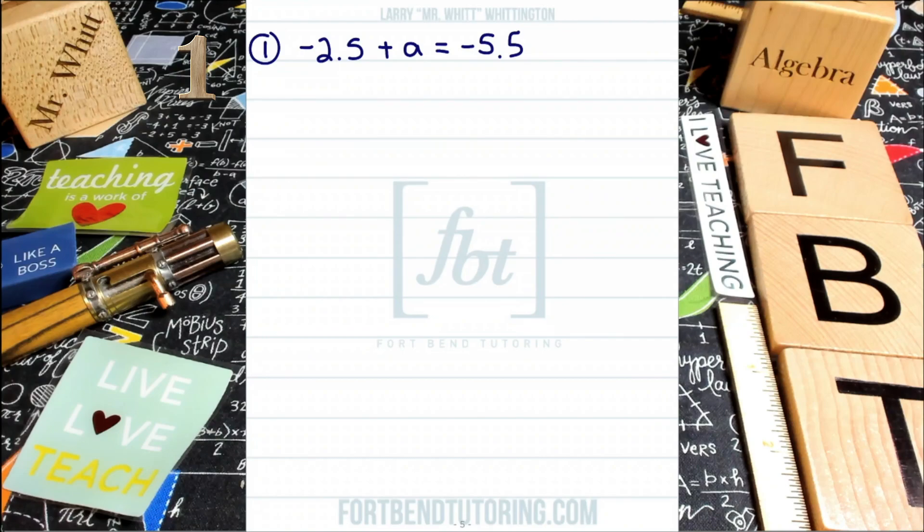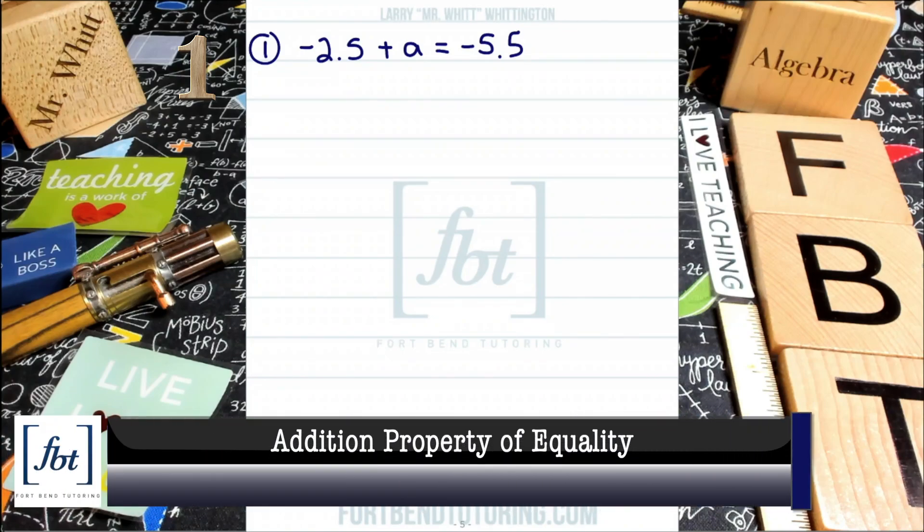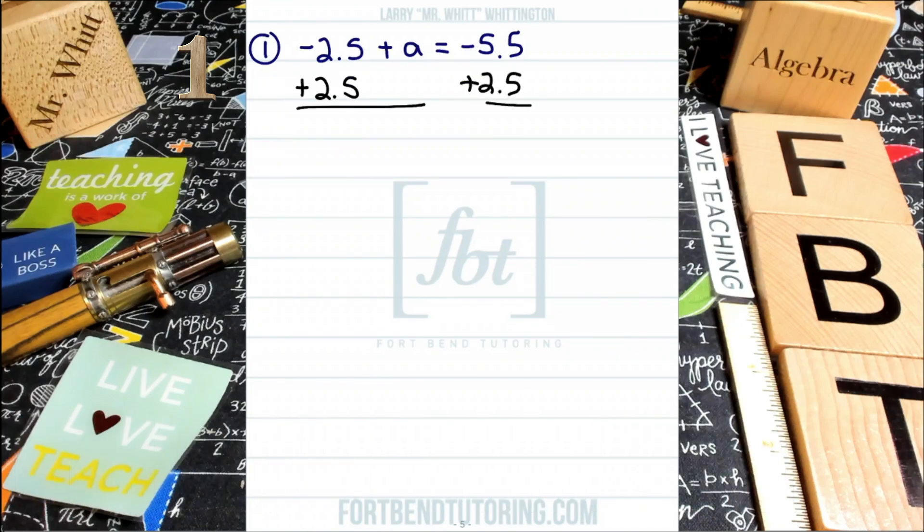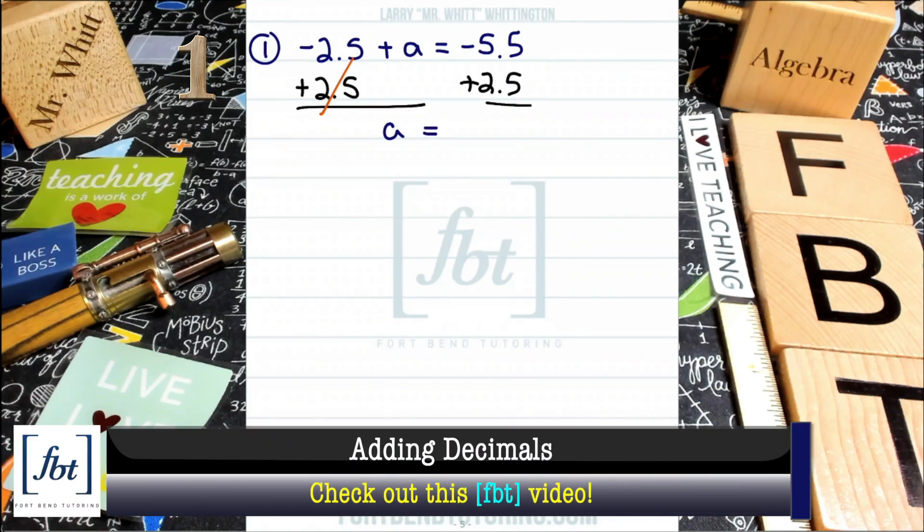And our first step is to isolate the variable. Now you could just go ahead and use the addition property of equality, guys, and just simply add 2.5 to both sides of the equation. This is something that you could do. And in simplifying, your additive inverses will cancel out. You'll bring down the variable A, which equals 2. It's going to be a negative value because you have to keep the sign of the biggest value there. So there we go.